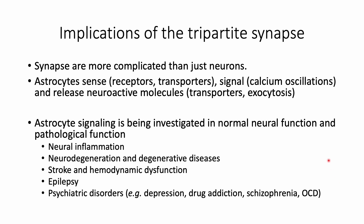Research is ongoing as this is a relatively new research area. In addition to finding out new information about how astrocytes contribute to normal brain function, astrocytes have been implicated in many diseases and pathological conditions such as neuroinflammation, neurodegeneration, and degenerative diseases such as Parkinson's disease and Alzheimer's disease, stroke and hemodynamic dysfunction, epilepsy, and many psychiatric disorders such as depression, drug addiction, schizophrenia, and OCD.